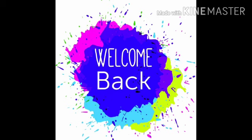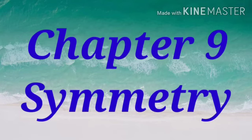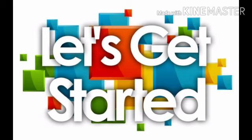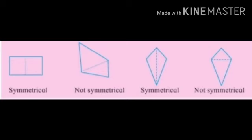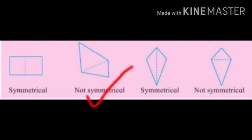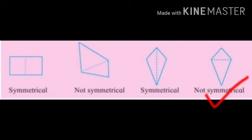Welcome back, my dear students. Let's continue with Chapter 9: Symmetry. Some pictures are given; we have to find out whether the given figure is symmetrical or not symmetrical. The first figure divides the picture into two equal parts, so it is symmetrical. The next one does not divide the figure into two equal parts, so it is not symmetrical. The next divides the picture into two equal parts, so it is symmetrical. The last one does not divide the figure into equal parts, so it is not symmetrical.